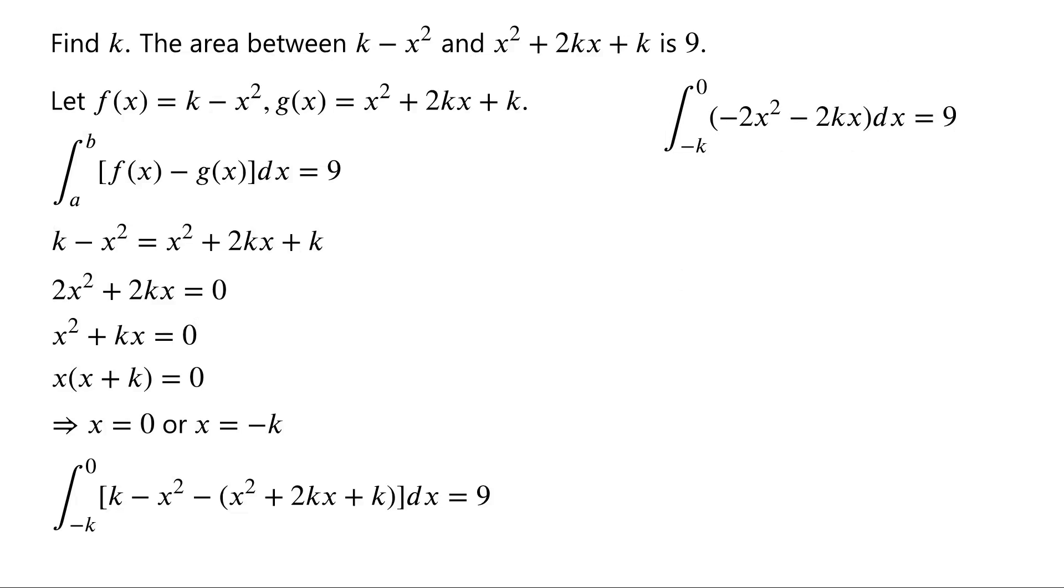So, we have negative 2 thirds times x cubed minus kx squared from negative k to 0 equals 9. That is, negative 2 thirds times k cubed plus k cubed equals 9. That is, 1 third times k cubed equals 9. k cubed equals 27. So, k equals 3.